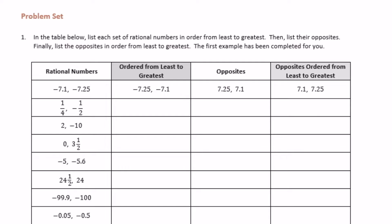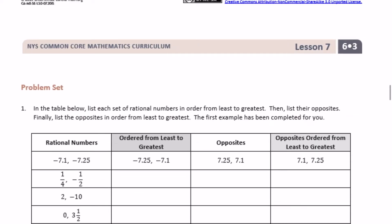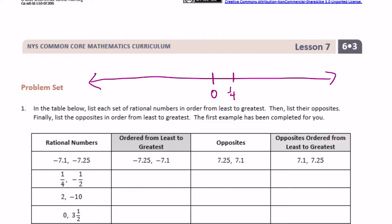Let's go to the second one. We're going to order one-fourth and negative one-half from least to greatest. So if we had a number line, here's zero — one-fourth would be over here, and negative one-half might be like right there. Negative one-half is smaller because it's to the left of zero than one-fourth.